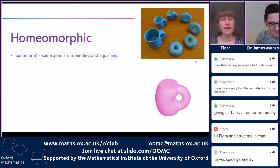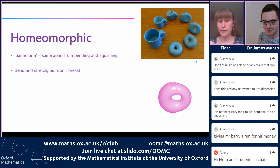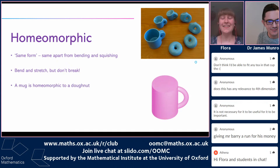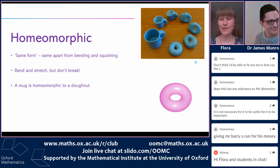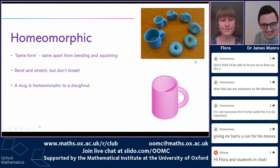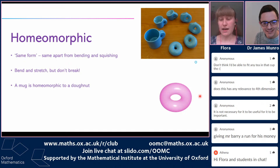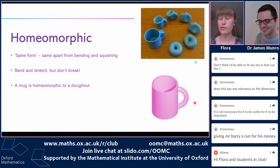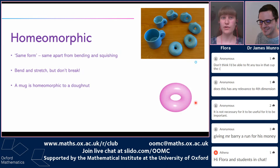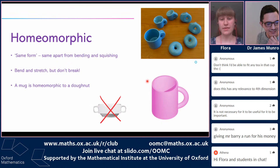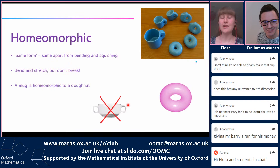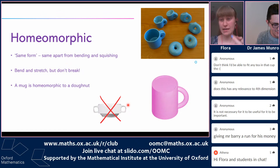To make something homeomorphic to it, we can bend and stretch it, but don't break it. A common mathematical joke is that a topologist can't tell the difference between a mug and a donut, because a mug and a donut are homeomorphic. You can see from the animation that a donut stretches out and bends to become a mug — both only have one hole going through them. A soup bowl with two handles would not be homeomorphic to a donut, because it has two holes.